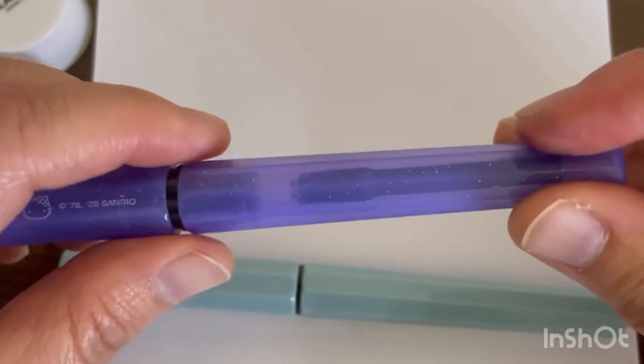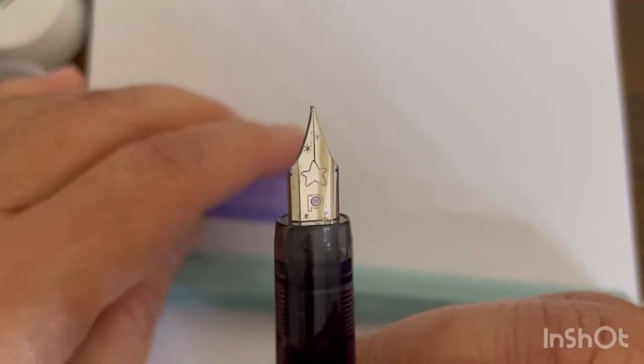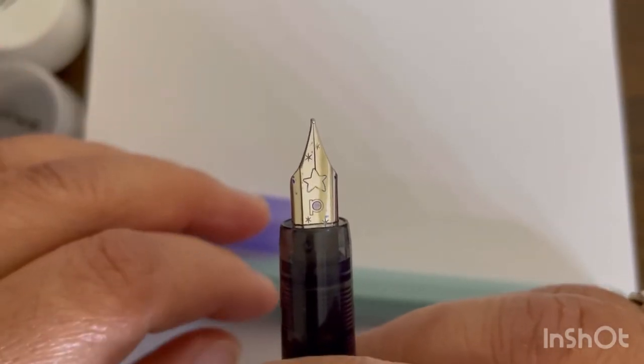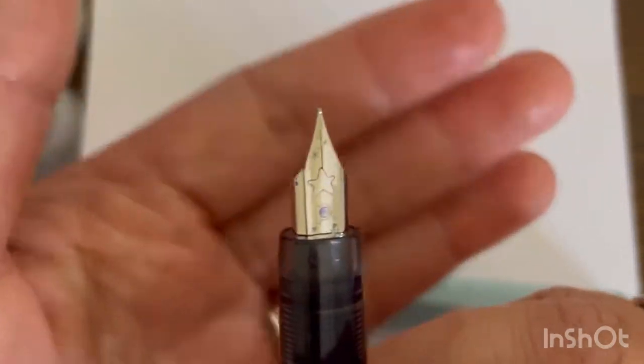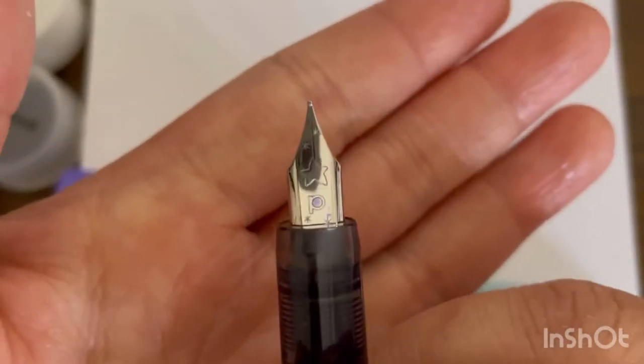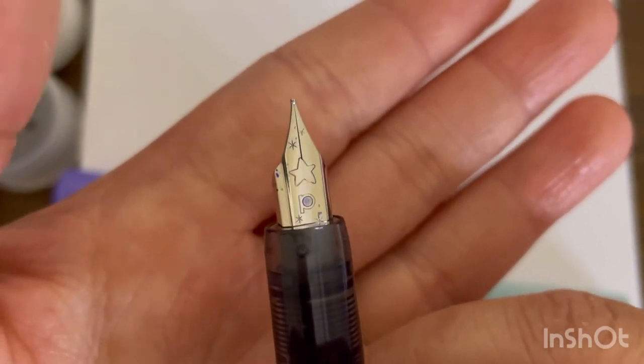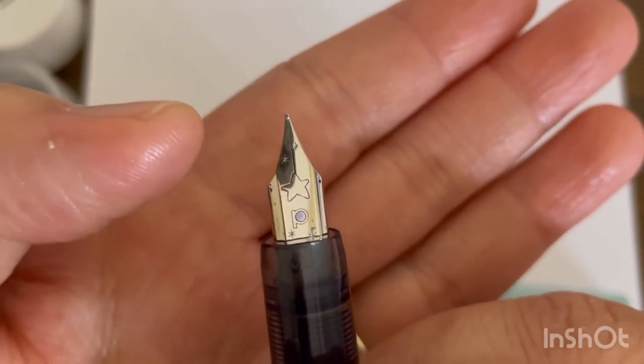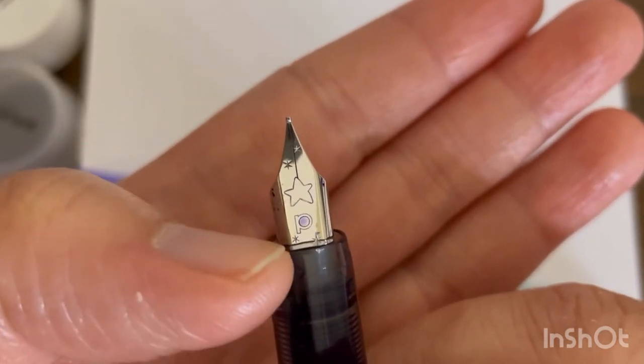Now the nib itself is made of metal - as you can see... what did I say, did I say metal? Yeah, it's made of steel I should say. It's stainless steel. As you can see the nib is very cute - it has that star engraving. It's very cute. It also has that Platinum logo.